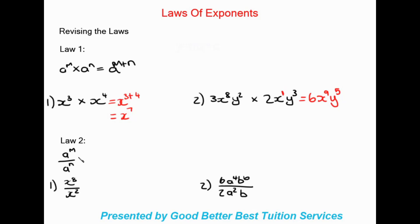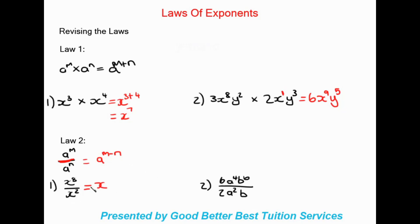Law number two: we have a to the power of m over a to the power of n. When we are dividing bases that are the same, the exponents will be subtracted. We keep that a and do m minus n — you're minusing the bottom exponent from the top. For example, x to the power of eight divided by x to the power of two: same base, so it's eight minus two.